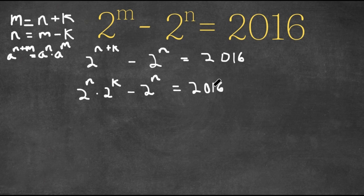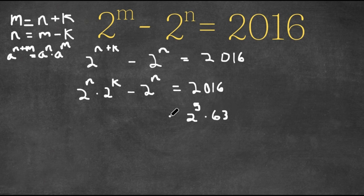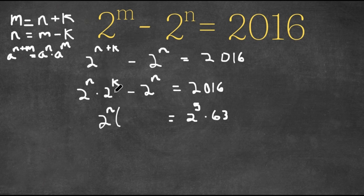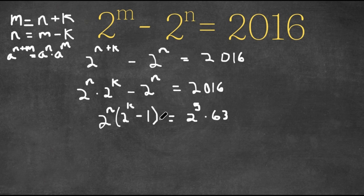So now what I'm going to do is I'm going to rewrite 2016 as 2 to the power of 5 times 63. And then I'm going to factor out 2 to the power of n. So 2 to the power of n times 2 to the power of k divided by 2 to the power of n is 2 to the power of k, and 2 to the power of n divided by 2 to the power of n is 1 — so minus 1. We get 2 to the power of n times (2 to the power of k minus 1) equals 2 to the power of 5 times 63.